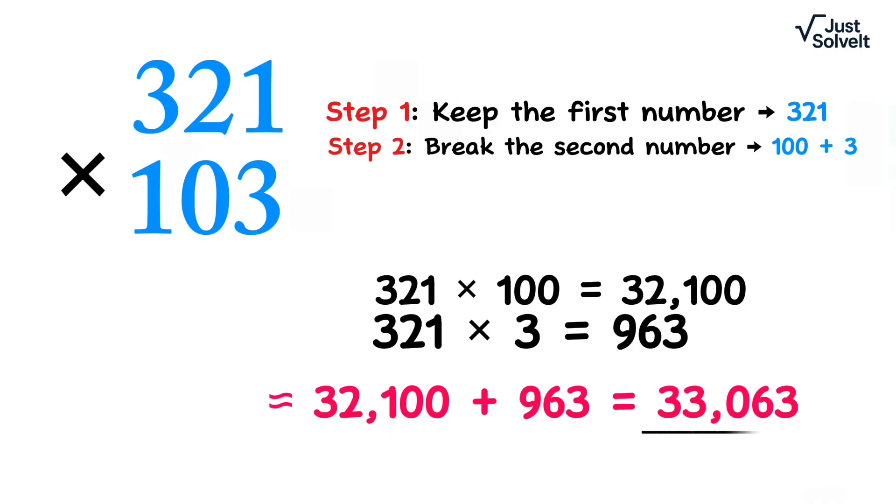32,100 plus 963 equals 33,063. Boom! You got the answer. You didn't do full multiplication, you just used smart splitting. This is called the distributive method. But don't worry about the name, just remember the idea.